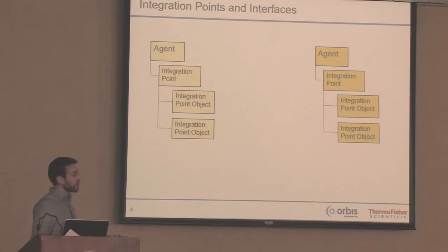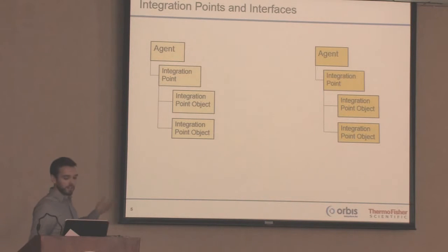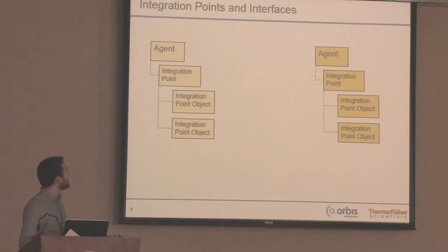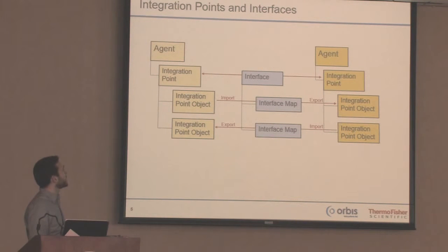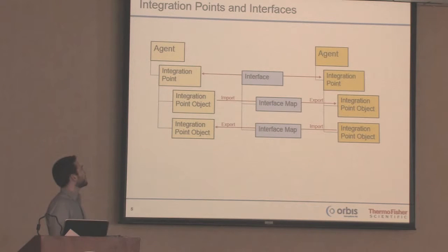There is a hierarchical structure in Integration Manager where the agent has an integration point. An integration point essentially represents a system within the sample manager, and connecting one integration point to another forms a quantum interface. Each integration point can have what's known as integration point objects — an input and an export — and this will form a bi-directional interface. Each system has two integration point objects, an input and an export, and on both of those we perform transforms.